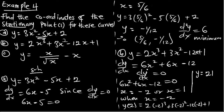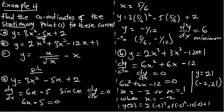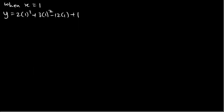When x = 1: y = 2(1)³ + 3(1)² - 12(1) + 1 = -6. So the second turning point is (1, -6). Therefore the two turning points are (-2, 21) and (1, -6).